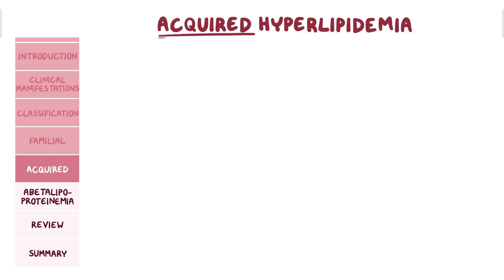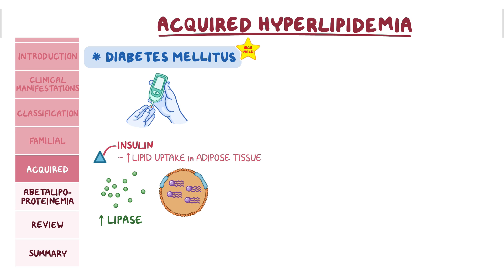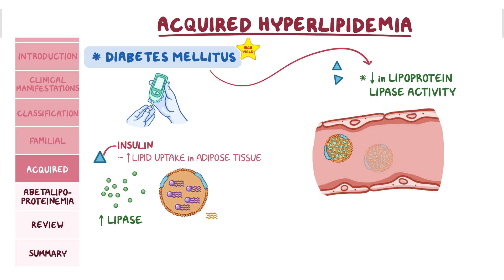On to the acquired causes of hyperlipidemia, starting with the most common cause: diabetes mellitus. Normally, one of the functions of insulin is to increase lipid uptake in adipose tissue. It does this by increasing the activity of lipoprotein lipase to liberate fatty acids from VLDL and chylomicrons. In both type 1 and type 2 diabetes, insulin levels eventually drop, causing a decrease in lipoprotein lipase activity. So now, instead of being broken down and stored, large amounts of VLDL particles just accumulate in the blood, and these eventually get converted to LDL, the culprit in atherosclerosis.